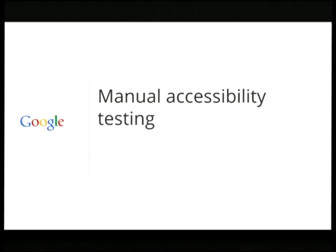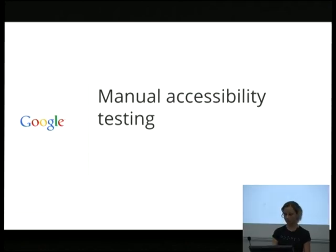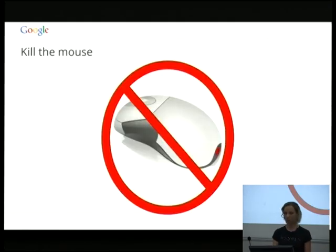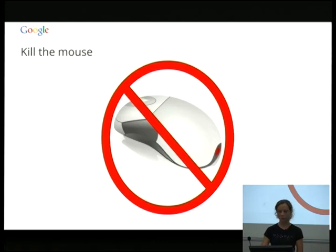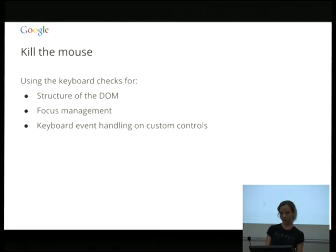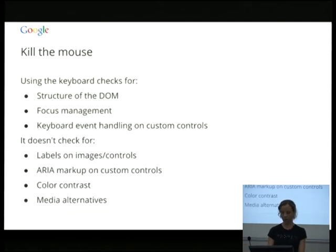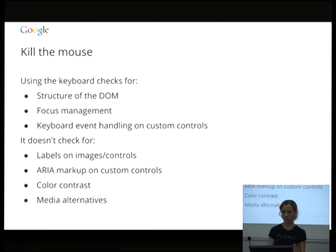That's a quick background on accessibility. Now I'm going to look at how you actually test for it. When we start manually testing accessibility, the first thing to do is kill the mouse. Addressing keyboard-only usability is going to get you a long way towards complete accessibility. Using the keyboard only checks for the structure of the DOM, whether things are in a sensible tab order, focus management, whether your focus is visible, and keyboard event handling on custom controls.